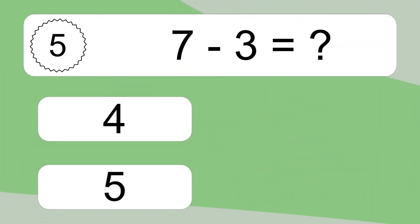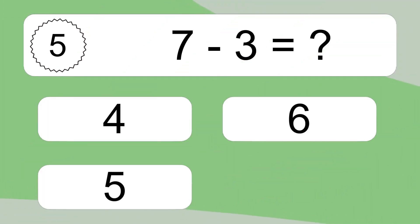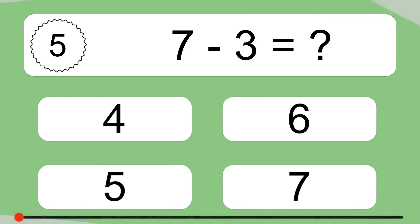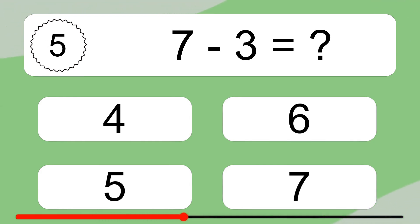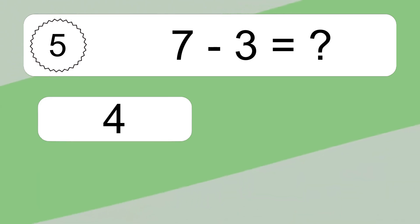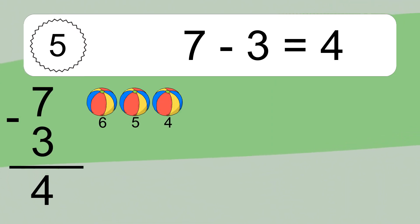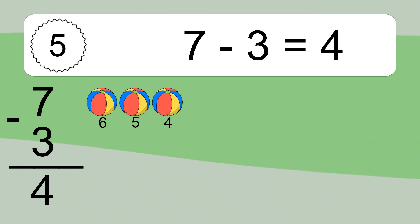7 minus 3 equals what? 7 minus 3 equals 4. Let's count it: 6, 5, 4.